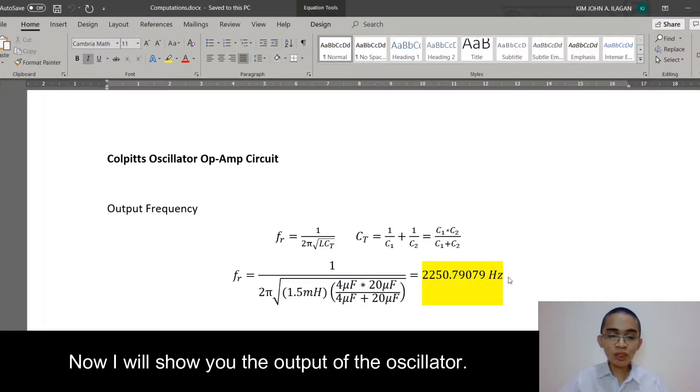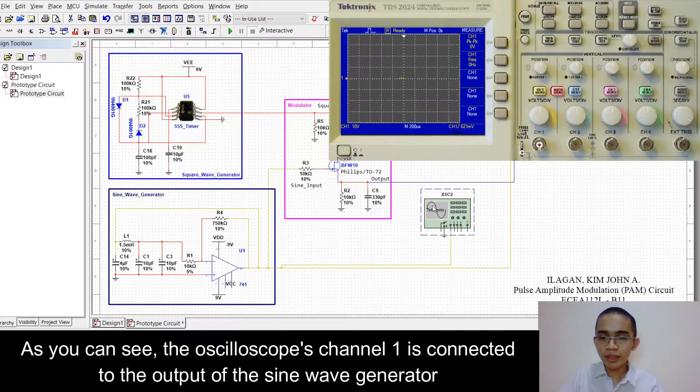Now I will show you the output of the oscillator. As you can see, the oscilloscope channel 1 is connected to the output of the sine wave generator.